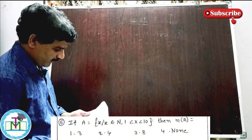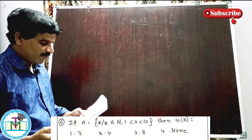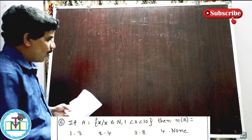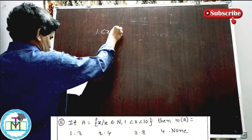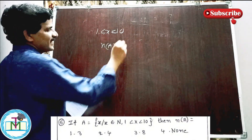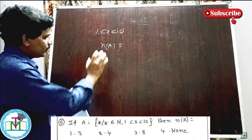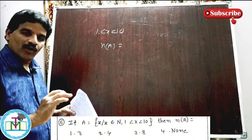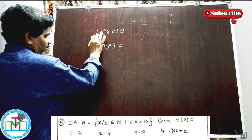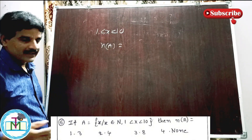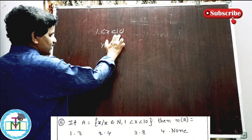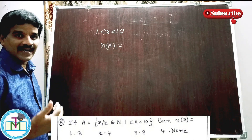Question number five: the set A is equal to {x such that x belongs to N and x is a natural number, 1 less than x less than 10}. n(A) means number of elements in the set. Here 1 is less than x and x is less than 10, so we don't include 1 or 10.